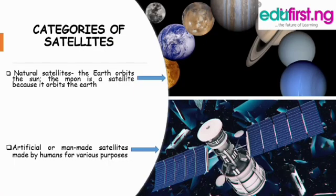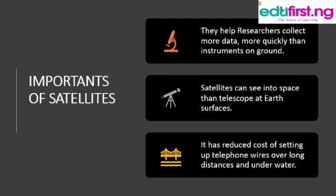What are the categories of satellites? We have two categories: natural satellites and artificial or man-made satellites. Examples of natural satellites are the Earth and the moon — the Earth orbits the Sun and the moon orbits the Earth. Artificial or man-made satellites are those made by human beings, by scientists, for different and various purposes.